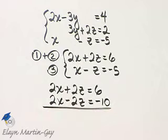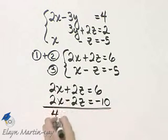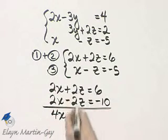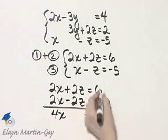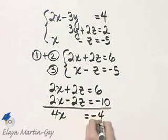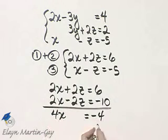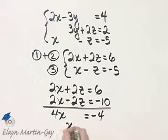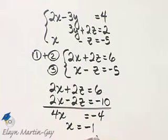Notice what happens now. Two x plus two x is four x. The z's subtract out and I have six minus ten or negative four. And if I divide both sides by four, I'll have that x is negative one.